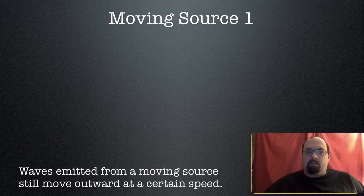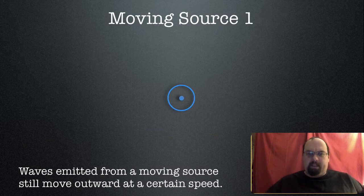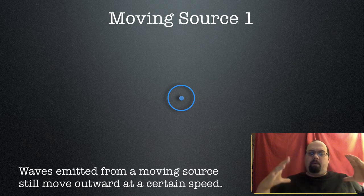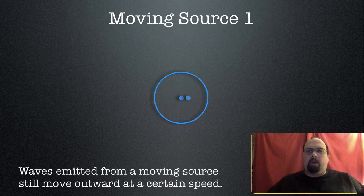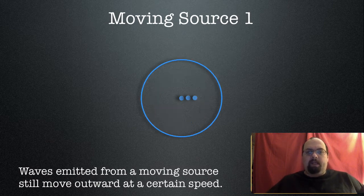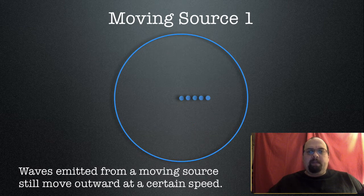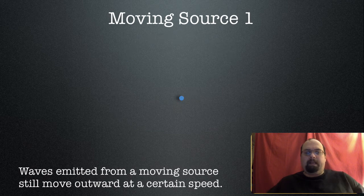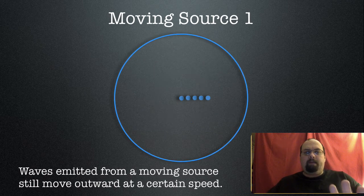Now let's have the point source move. Here's our point source, and it's here when it generates the first sound wave. As far as that sound wave is concerned, it will just grow from that point — it does not know that the source is moving. So the second sound wave: now the source has moved. That one shell will continue to grow outward without regard to the fact that the source is moving. That's a single beat, a single wave crest moving outward, unaffected by the moving source.